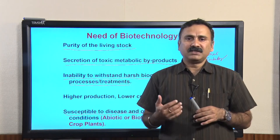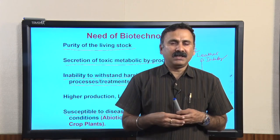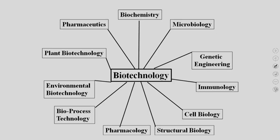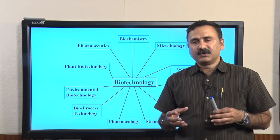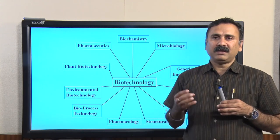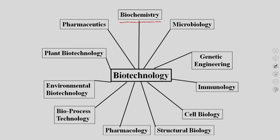You can also develop crops resistant to insects, so when insects bite, the crops are unaffected and losses are avoided. Since biotechnology is a complex science, it requires inputs and knowledge from different fields: biochemistry, microbiology, genetic engineering — which can be used to develop chimeric molecules — immunology to develop vaccines, cell biology, structural biology, and pharmacology to develop drugs important for human beings.